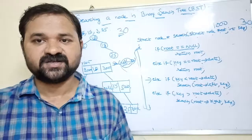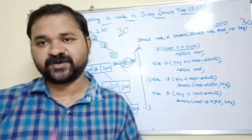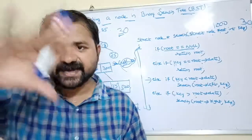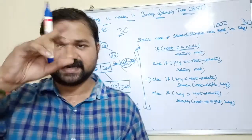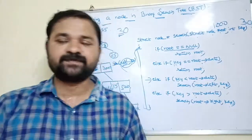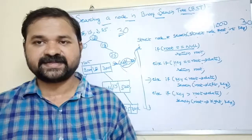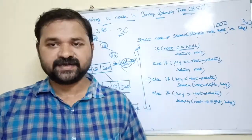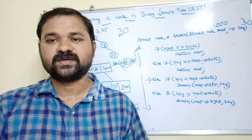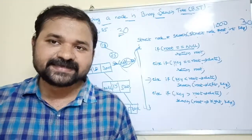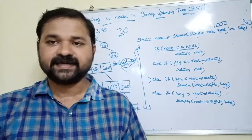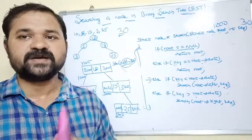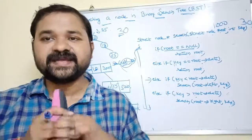In this way, we can perform the searching operation on a binary search tree. The logic is simple: compare the key with the root element. If they are the same, the key is found. Otherwise, if the key is less than root, search the left subtree; if greater, search the right subtree. This is how searching works on a binary search tree.